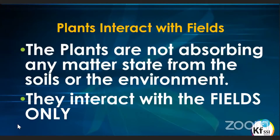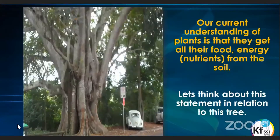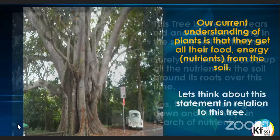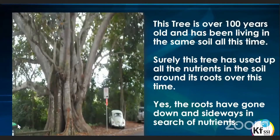This is quite a hard concept to understand for a lot of people, because we are so used to throwing compost and fertiliser into our soil, thinking this is what makes the plants grow. To understand that plants are only using the fields around them for their energy, we have to look at this tree. This particular tree is over 100 years old and has been living in the same spot all this time — the same patch of soil. You'd think by now it would have used up all the nutrients in that soil around its roots.